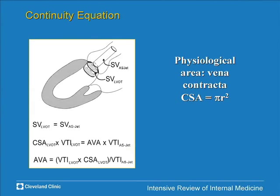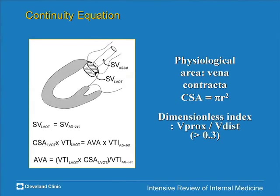Continuity has been the standard for about two decades and works very well for following patients. If you can't measure the LVOT diameter well, you can estimate severity using the dimensionless index — dividing LVOT velocity by valve velocity. If this ratio is greater than 0.3, you're not dealing with severe aortic stenosis. It's important to sample velocity at multiple sites — apex, right sternal border, suprasternal notch — as the highest signal may not always be at the apex.